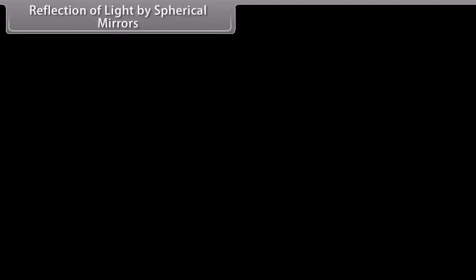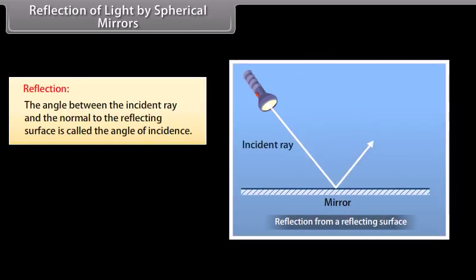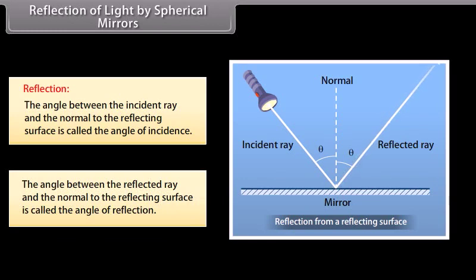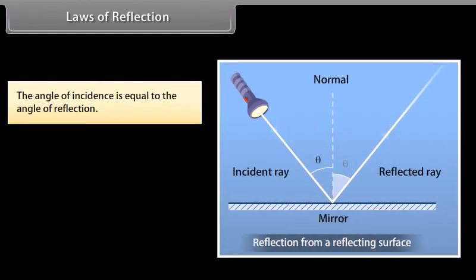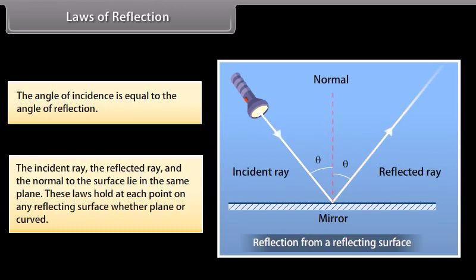Reflection of light by spherical mirrors: The angle between the incident ray and the normal to the reflecting surface is called the angle of incidence. The angle between the reflected ray and the normal is called the angle of reflection. The laws of reflection state that the angle of incidence equals the angle of reflection, and the incident ray, reflected ray, and normal lie in the same plane. These laws hold at each point on any reflecting surface, whether plane or curved.